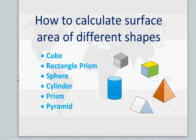Hi, this video is about how to calculate surface area of different shapes. The shapes covered here are the cube, rectangular prism, sphere, cylinder, prism, and pyramid. So let's start with the cube first.